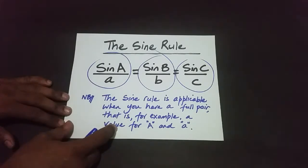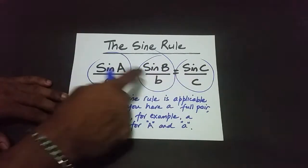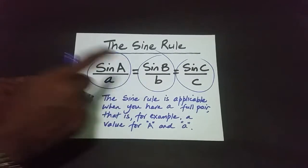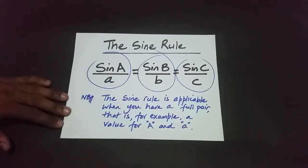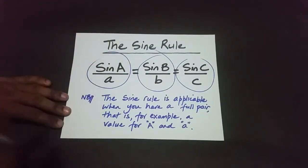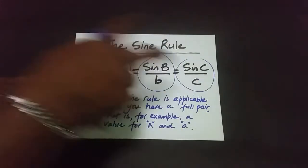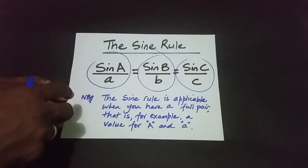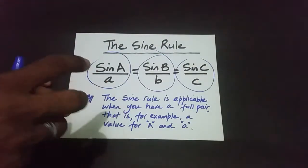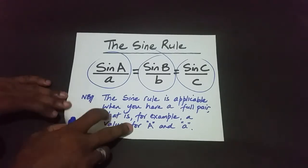You can't just pick any two pairs — you have to use the specific combination depending on what information is given and what you're asked to find. There must be a full pair in the diagram. I'll explain that more clearly with an example.